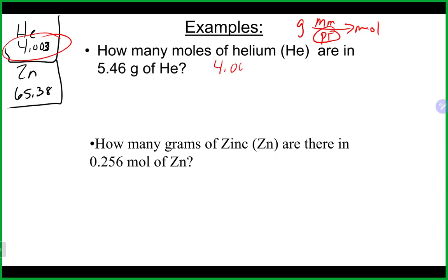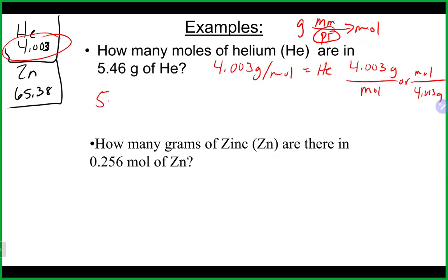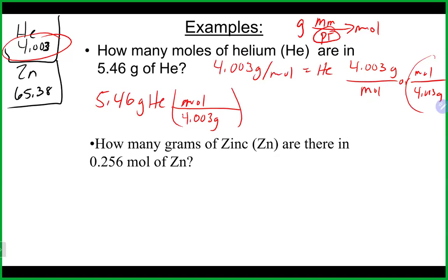The molar mass of helium is 4.003 grams per mole. Using dimensional analysis: 5.46 g × (1 mol / 4.003 g) = 1.36 moles of helium. The grams cancel, giving us moles. For the second problem — grams of zinc from 0.256 mol of zinc — the abbreviation 'mol' means moles, not molecules. This is a moles to grams conversion, still using molar mass.